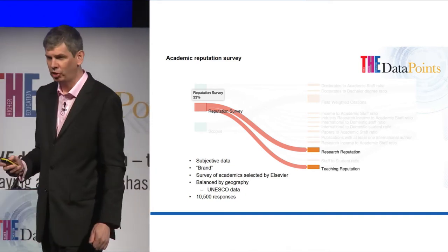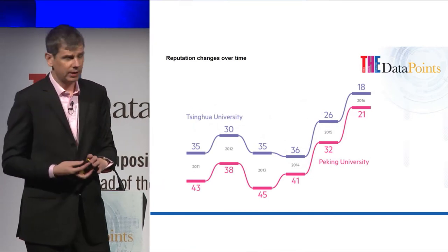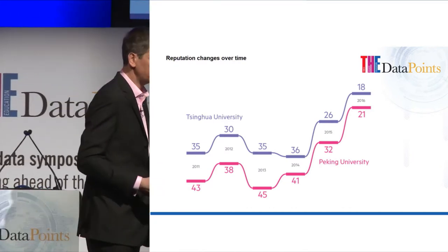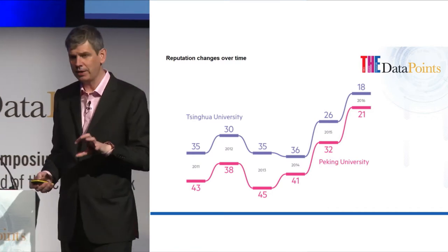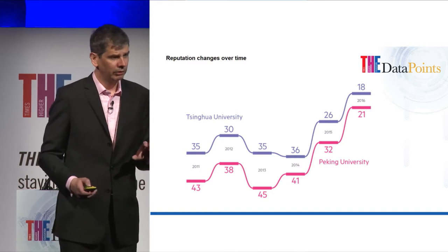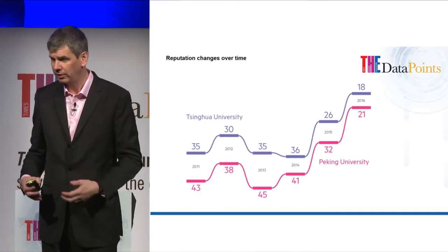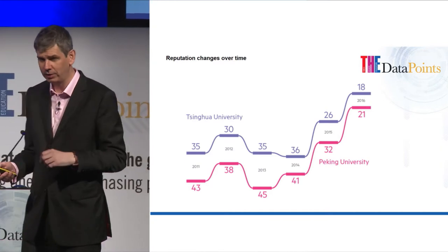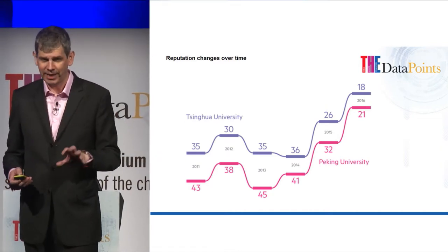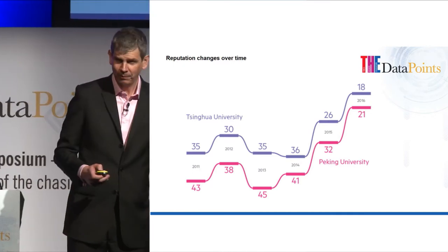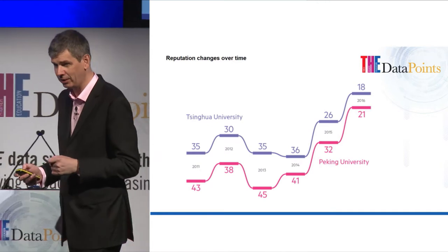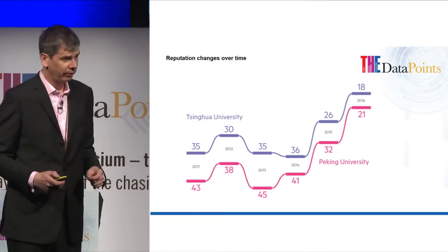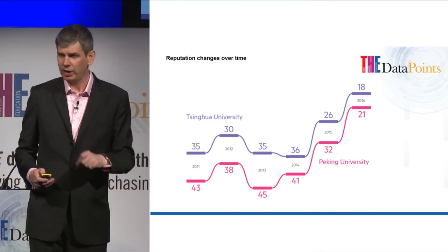Reputation does change. These are the ranks of the two leading Chinese universities over the last six years. Reputation does not stay constant. The UK and the US have benefited for a long time from having universities that are ancient and have a great tradition. That university I went to undoubtedly still gets reputation because of Isaac Newton, who hasn't produced any leading research in the last 400 years. That's the way reputation works — it's a very lagging indicator. But that kind of inbuilt advantage isn't going to last forever.